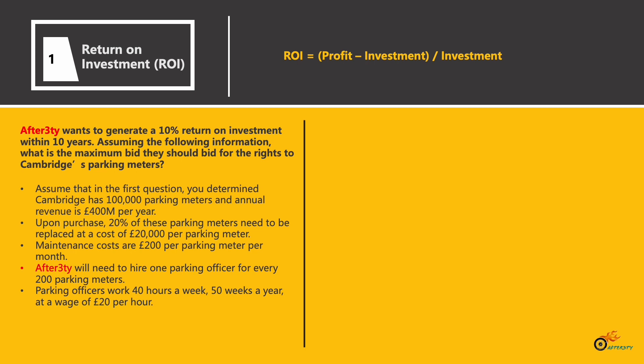The question is: the after 30 wants to generate a 10% return on investment within 10 years. Assuming the following information, what is the maximum bid they should bid for the rights to Cambridge's parking meters? These five bullets are the information we should consider when calculating the ROI — feel free to pause the question.